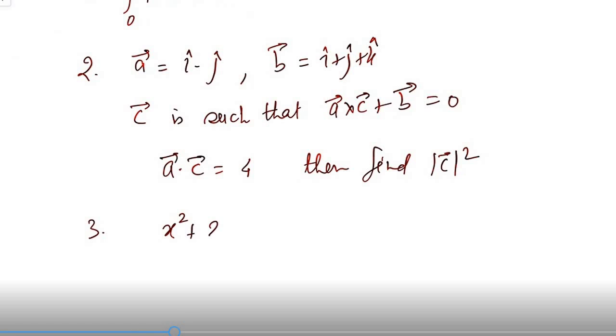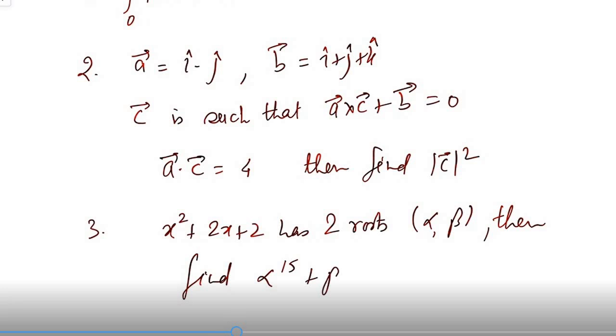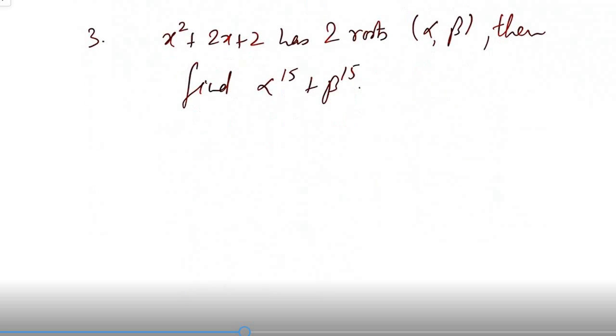Third hai, quadratic equation se: x square plus 2x plus 2 has two roots alpha beta, then find alpha to the power 15 plus beta to the power 15.